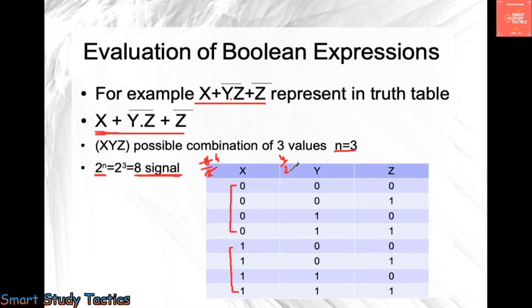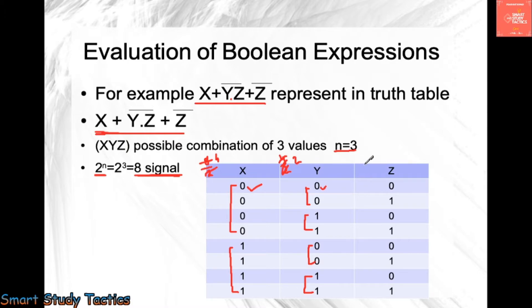For the y column, divide 4 by 2 to get 2, so write two times zero, two times one, two times zero, two times one. For the z column, divide 2 by 2 to get 1, so write one time zero, one time one — alternating all the way down. Always start from zero. I hope this table is clear to everyone.